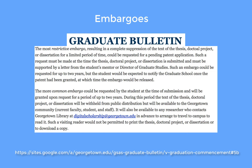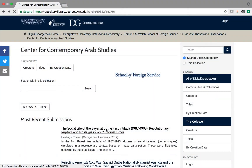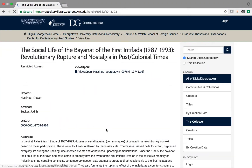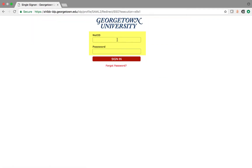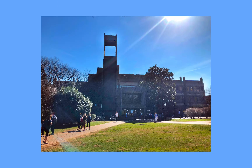The Graduate School offers two types of embargoes — the Common Embargo and the Restrictive Embargo — and also for three time frames: six months, one year, and two years. With a Common Embargo, the full text will be available in Digital Georgetown only to Georgetown University faculty, staff, and students with Net IDs, and upon request to readers who are on-site in Lowinger Library.